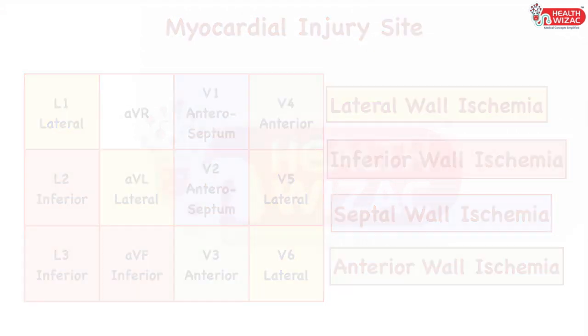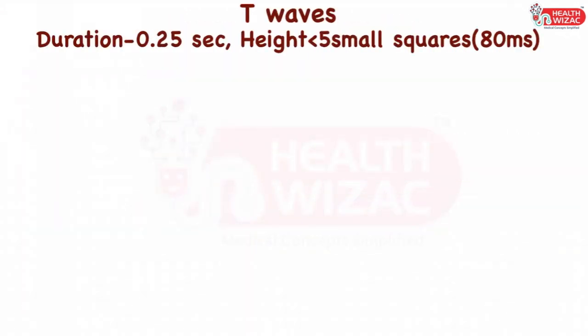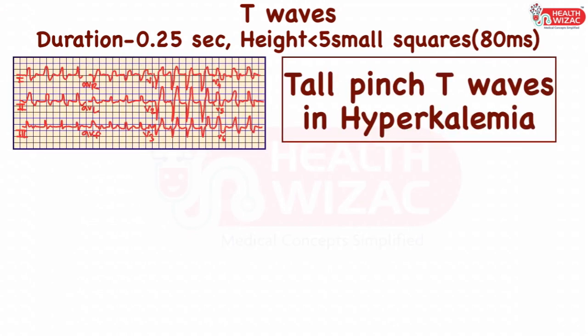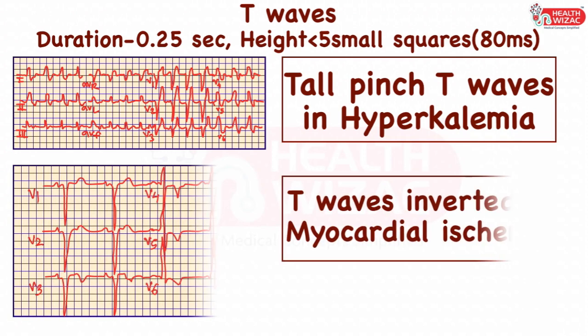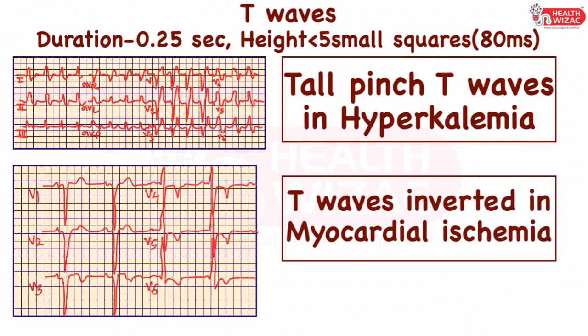T waves represent ventricular relaxation and usually have a duration of 0.25 seconds and height of less than 5 small squares with a positive deflection. Tall peaked T waves represent hyperkalemia, whereas inverted T waves are suspected of myocardial ischemia.